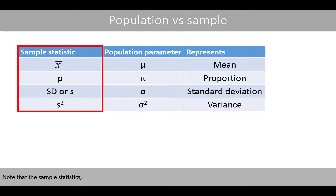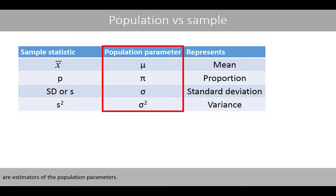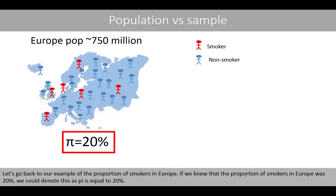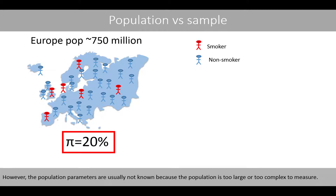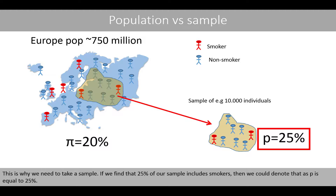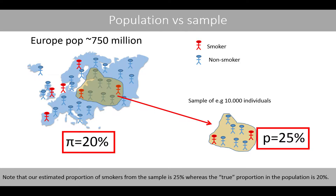Note that the sample statistics are estimators of the population parameters. Let's go back to our example of the proportion of smokers in Europe. If we knew that the proportion of smokers in Europe was 20%, we could denote this as pi is equal to 20%. However, the population parameters are usually not known because the population is too large or too complex to measure. This is why we need to take a sample. If we find that 25% of our sample includes smokers, then we could denote that as p is equal to 25%. Note that our estimated proportion of smokers from the sample is 25%, whereas the true proportion in the population is 20%.